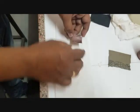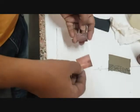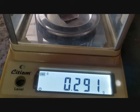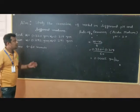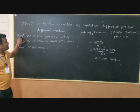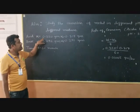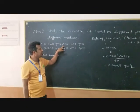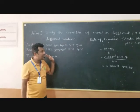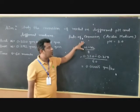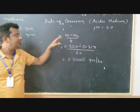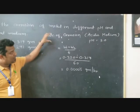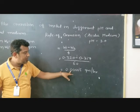Now we are going to weigh both foils. In our acidic medium, the copper strip had an initial weight of 0.320 grams, and after corrosion — after one hour — its weight became 0.317 grams. We calculate the rate of corrosion in acidic medium at pH 3, which is equal to 0.221 grams.